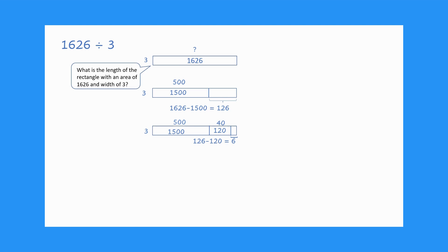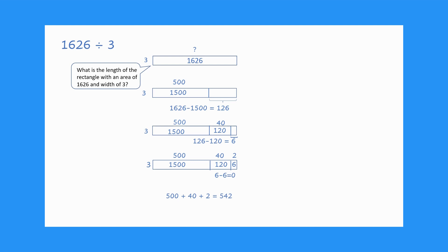Now we think: how many are in three groups that total 6? We use the inverse relationship of multiplication to show that three groups of two equals six. We label the last area of our rectangle 6 and the last length 2. We then add up our side lengths to get the total missing side length of 542.